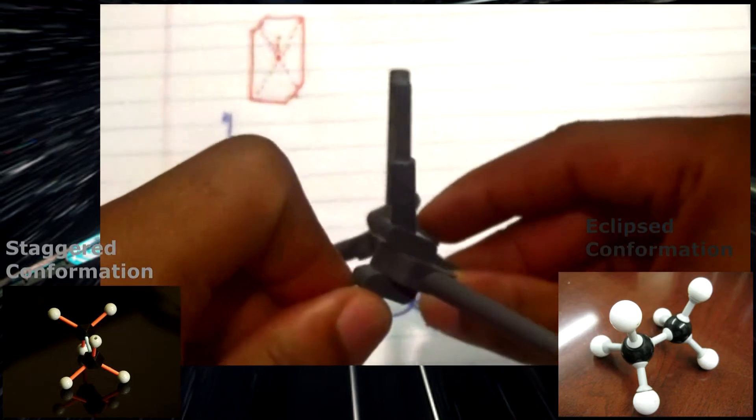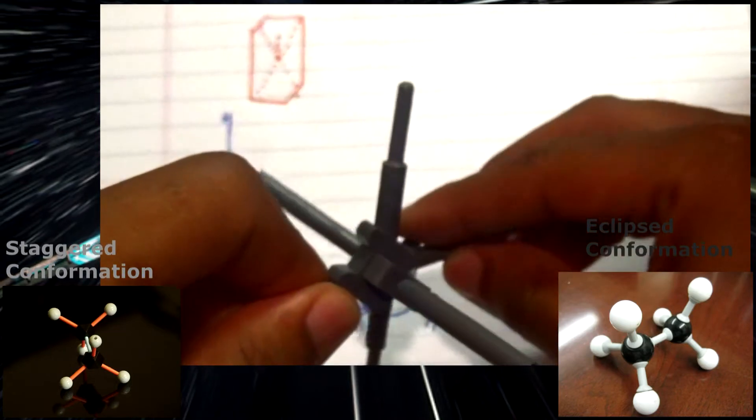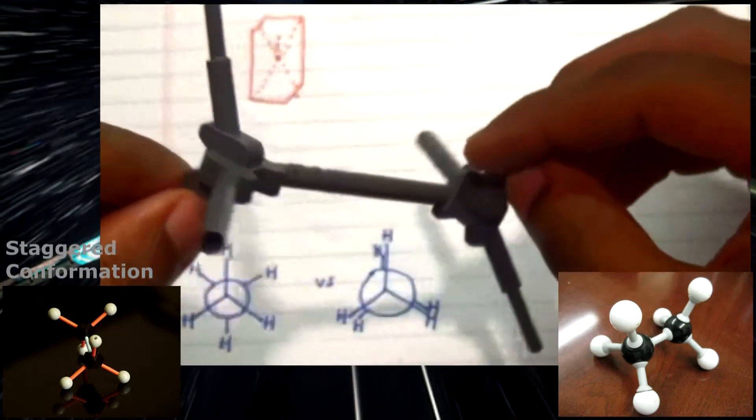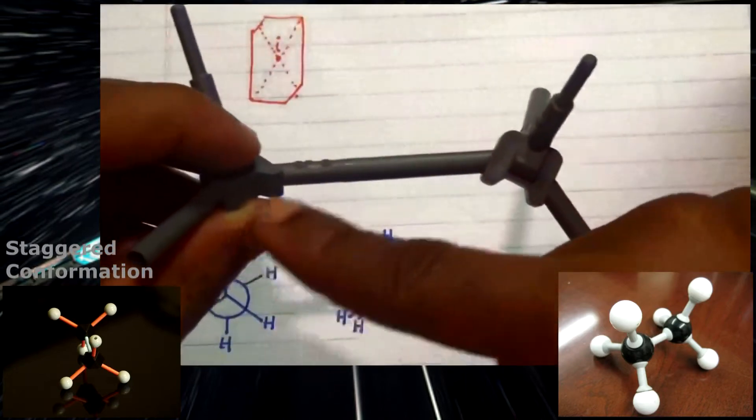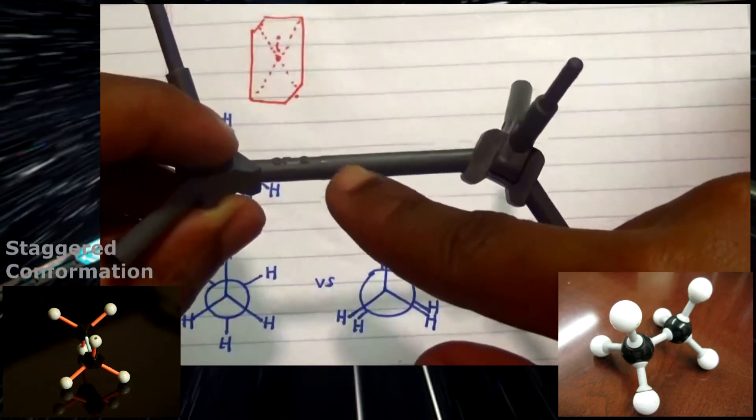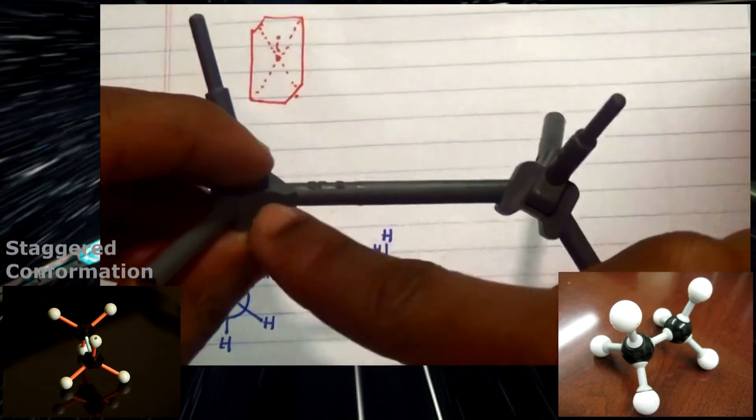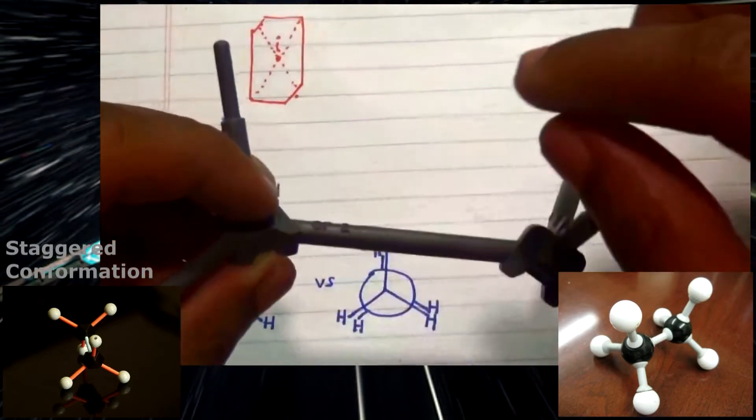We realize that the staggered does have an inversion center, which is equidistant from this part, or the midpoint in here, which is between the two carbon atoms.